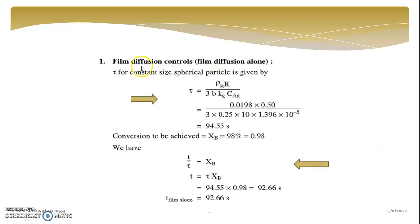So this is the first tau value that we will estimate. It is for gas phase resistance. So rho B into R upon 3B kg CAG, that is the formula for calculating tau if film diffusion is controlling the rate of reaction. So after substituting values, your answer is 94.55 second.